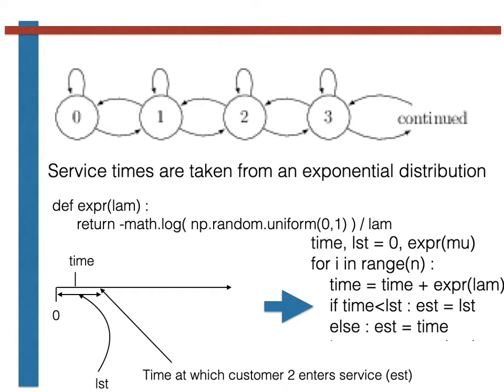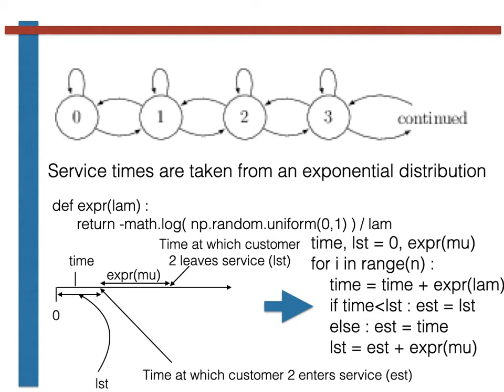Once customer 2 has entered service, the amount of time it will take him to leave service is given by an exponential random variable with parameter mu, as shown here. He has to take this extra time as the service time for each customer is an exponential random variable. In the code, we thus update the variable called LST to reflect the time at which customer 2 left service, the point shown here on the diagram.